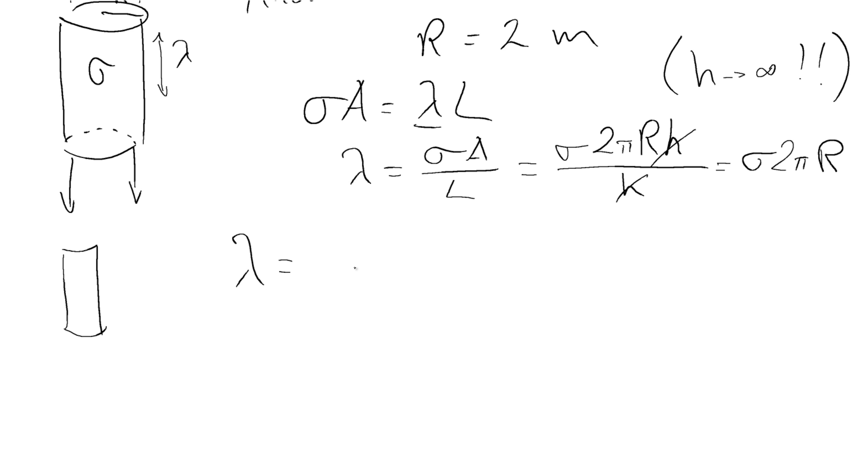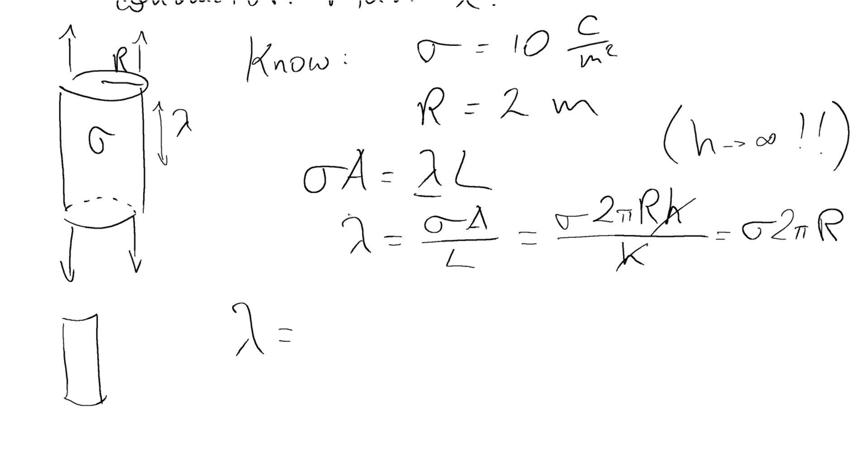So lambda is equal to our sigma, we can look up and our sigma was 10 Coulombs per square meter. That's 10 Coulombs per square meter. Then we have it multiplied by that factor 2π, and we multiply it by the radius, which is 2 meters.